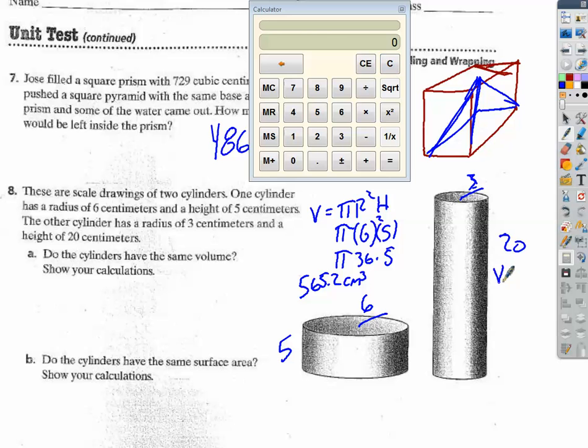On the other side, we'll do the same thing. Pi r squared h. So we have pi times 3 squared times 20. So 3 squared is 9 times 20 times pi. Oh, my goodness gracious. Look at that. They have the same volumes. Do they have the same surface area? The answer is probably going to be no. So yes, they do have the same thing.